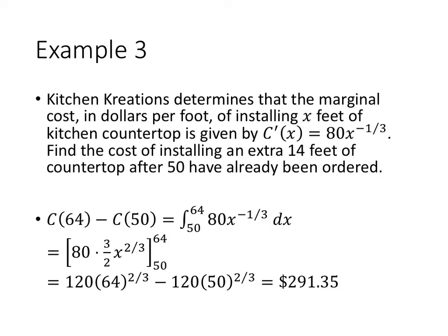So what we want then is the difference between the cost of installing 64 feet minus the cost of installing 50 feet. That's going to give us how much more it would cost to install these extra 14 feet. The 64 is coming from 50 plus the extra 14 that we want. So cost of 64 minus cost of 50, we're using the fundamental theorem a little bit backwards here, but that's the integral from 50 to 64 of our marginal cost function. We find our antiderivative, we plug in our two numbers 64 and 50, and when we do that using our calculator we get approximately $291.35.